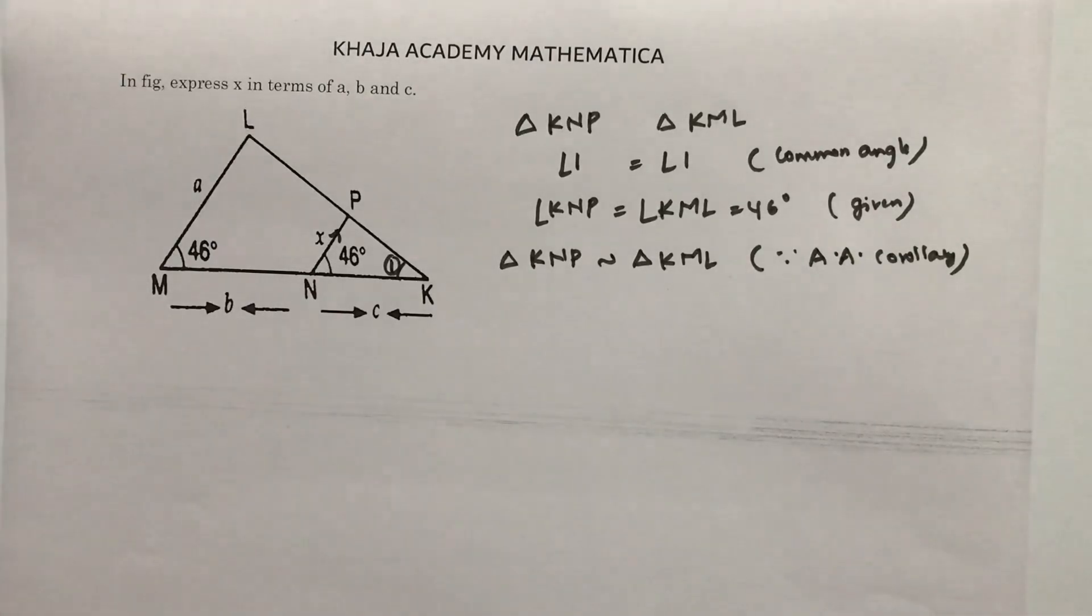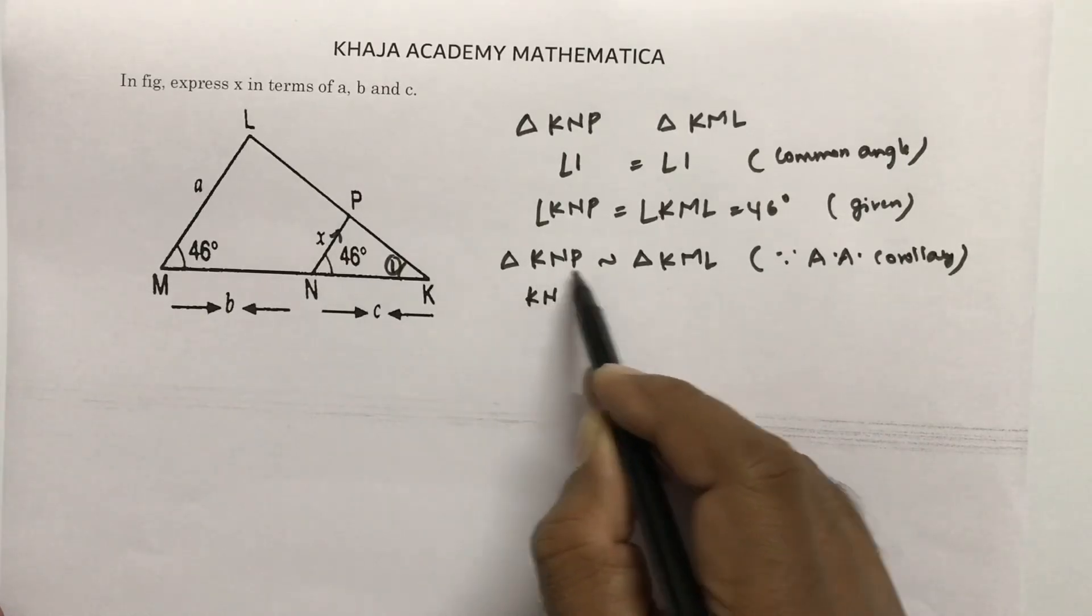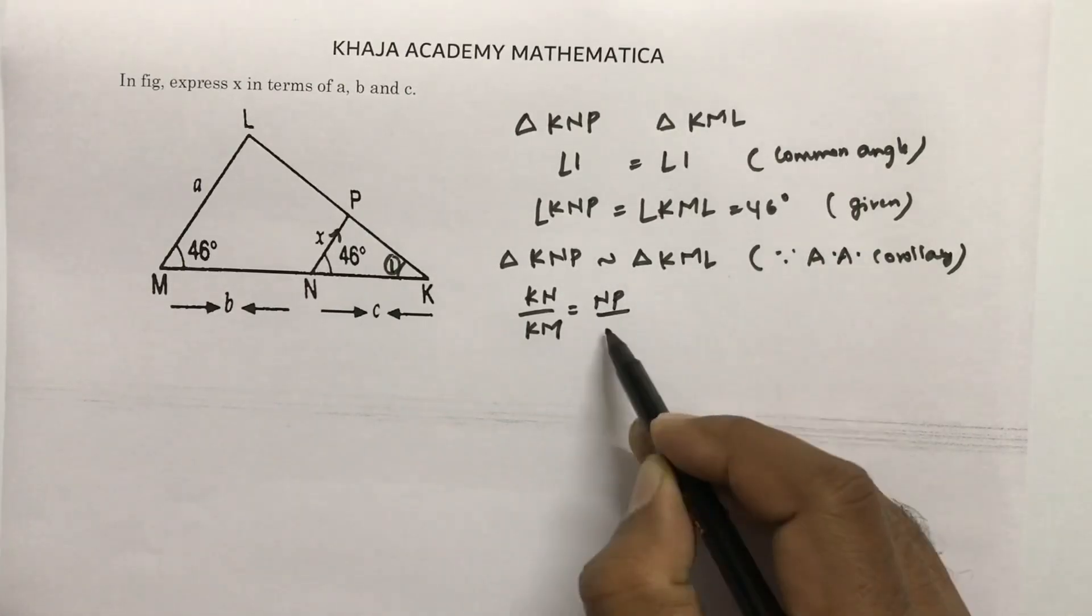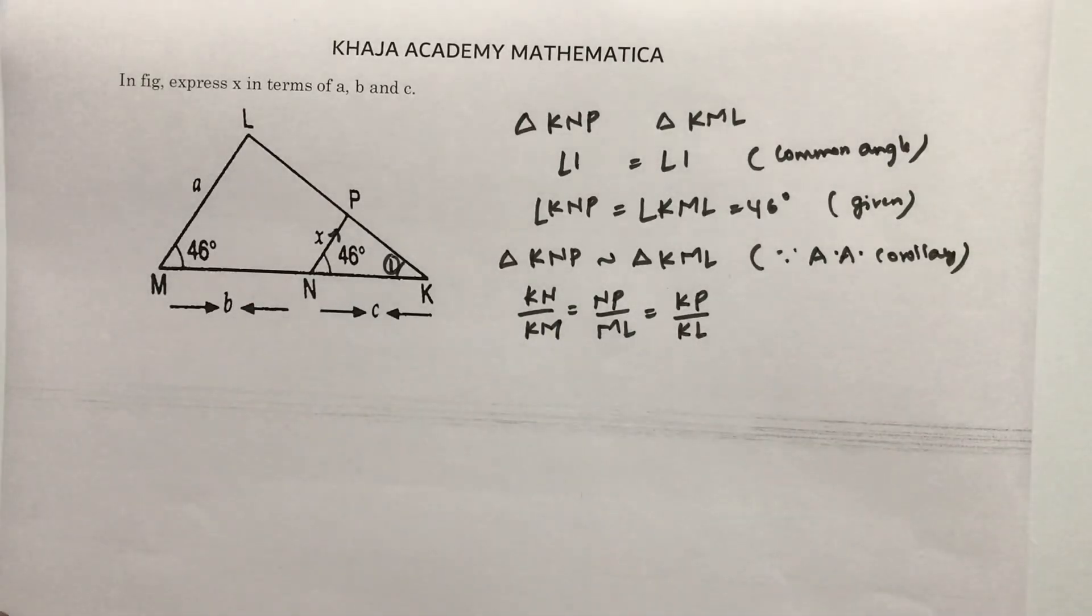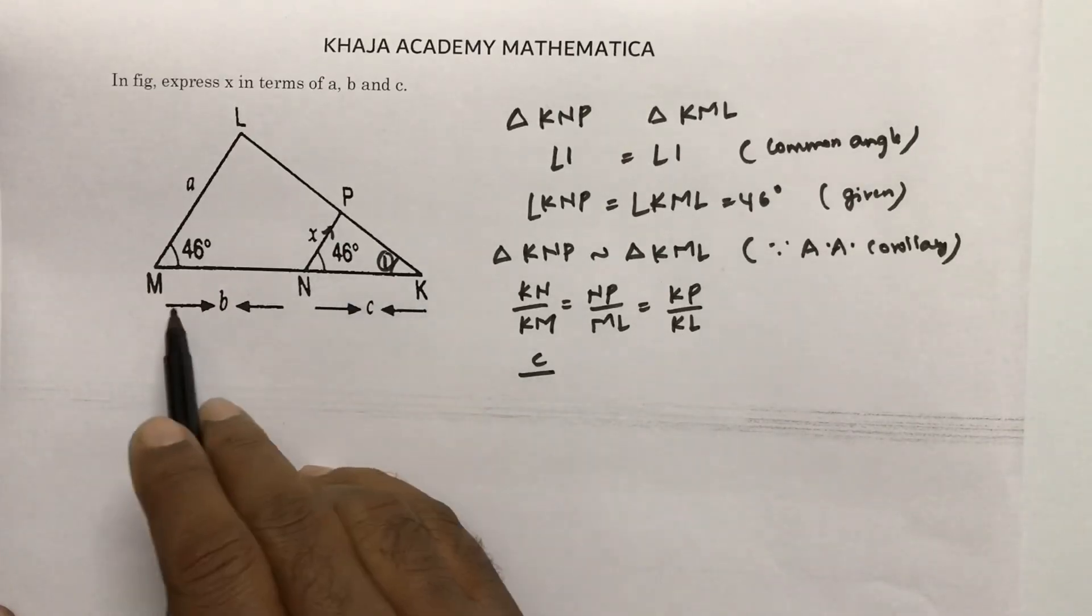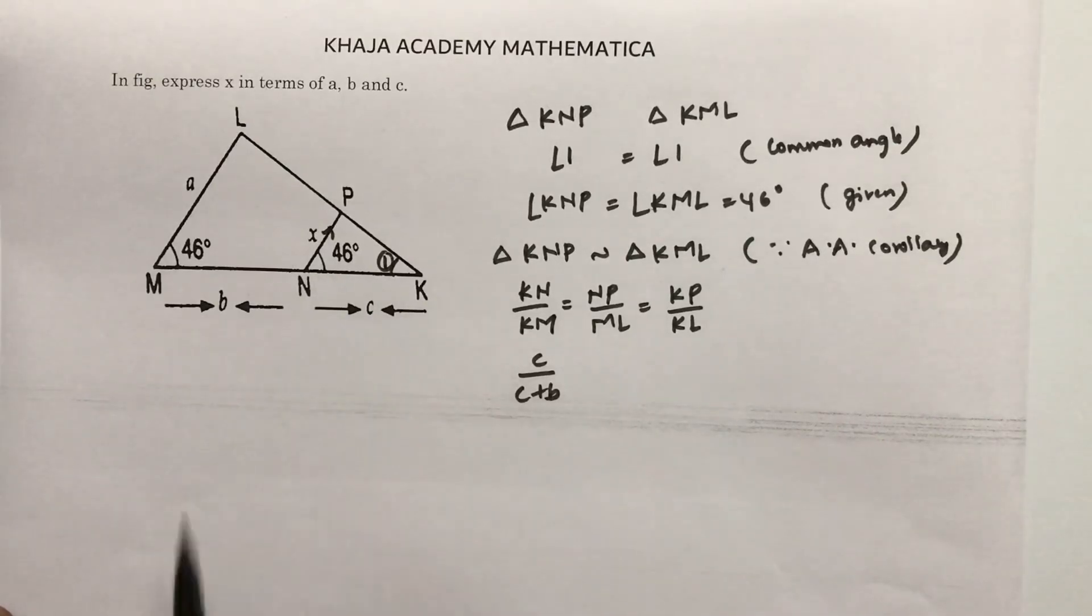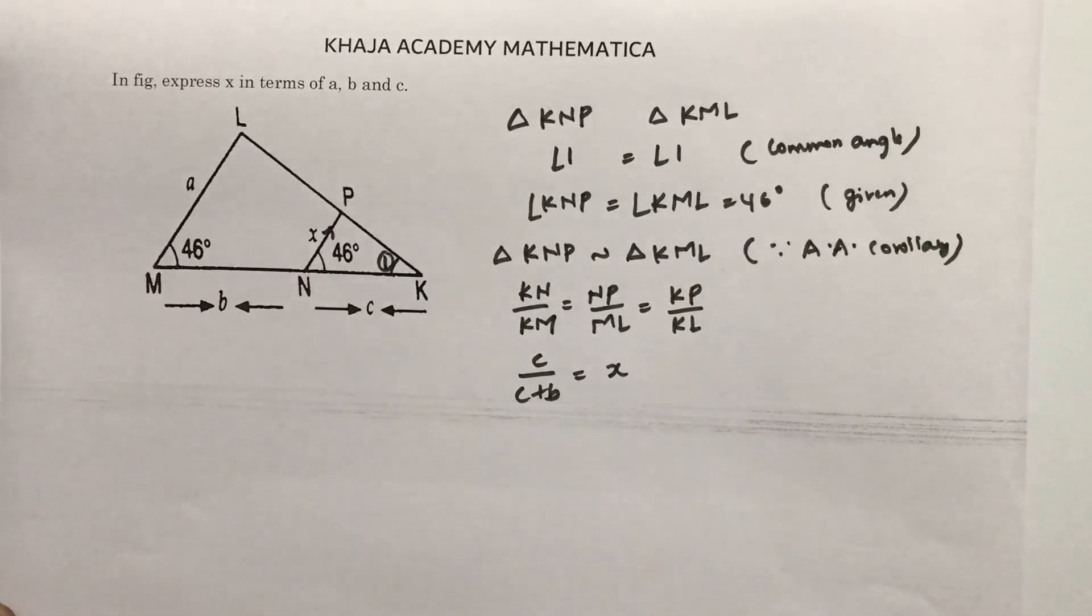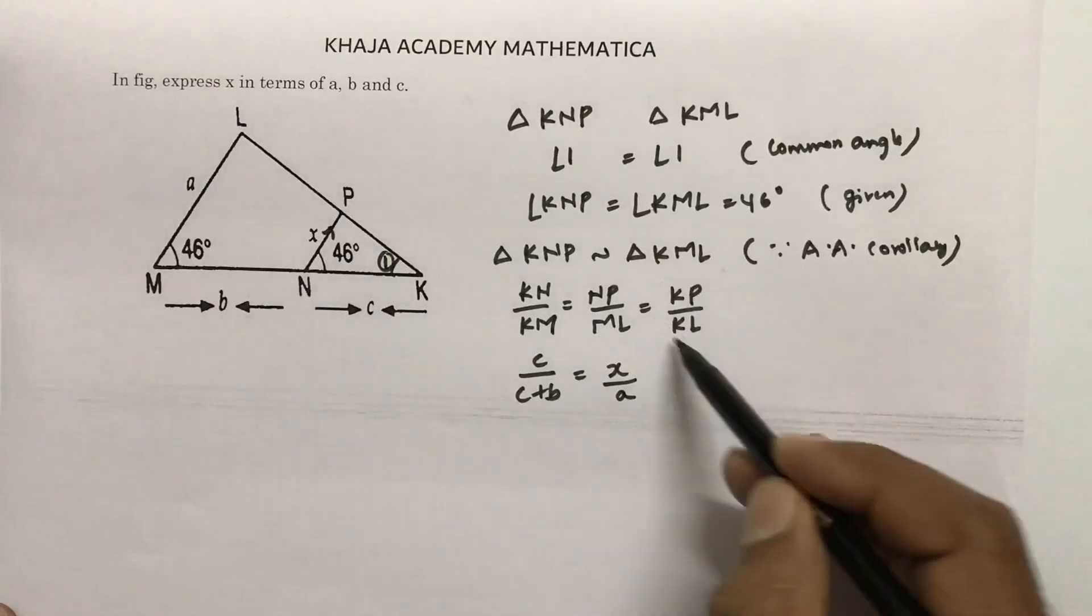If the triangles are similar, if I apply CPST—corresponding parts of similar triangles—I'll write the sides proportional: KN by KM, NP by ML, KP by KL. Now if you see the diagram and substitute the values: KN is c, KM is b plus c, NP is x, ML is a. KP and KL, if you don't have the values, you can skip.